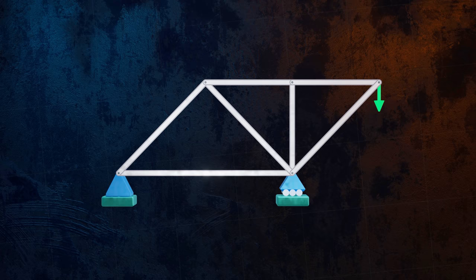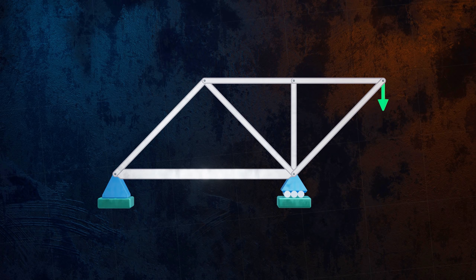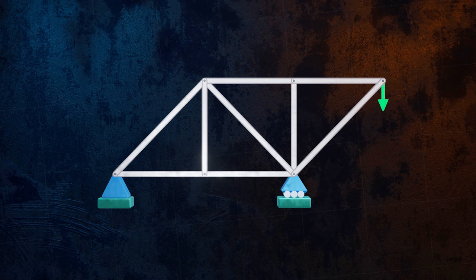This member is under compression, and since it's so long and thin, it's at risk of buckling. Members of a truss that are in compression are sometimes designed to be thicker than those in tension, to reduce the risk of buckling. And long compressive members are prevented from buckling by the use of bracing members.